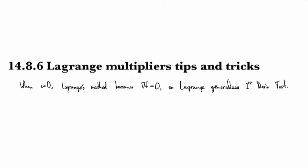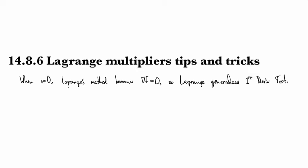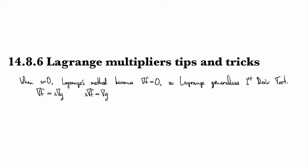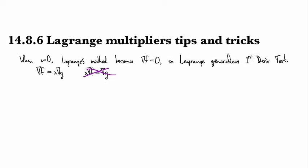Okay, so that's not actually particularly helpful. It's sort of interesting, but it's not really helpful for actually solving a problem, other than to note that it is important that we write gradient of f is equal to lambda times the gradient of g, and not put the lambda on the other side.